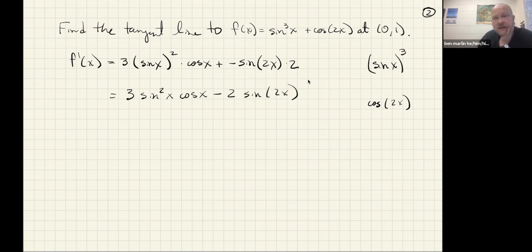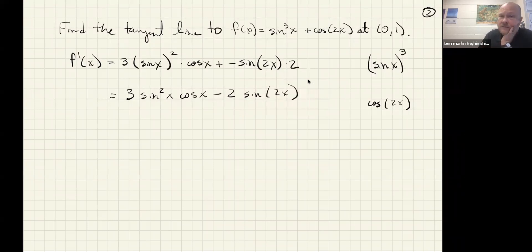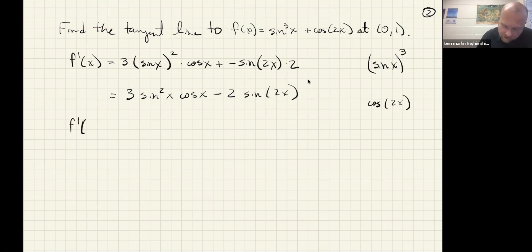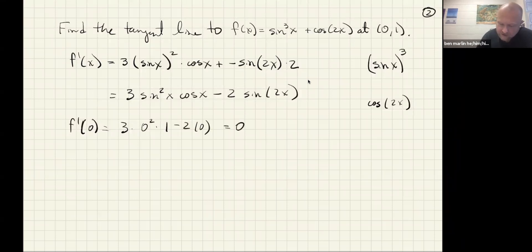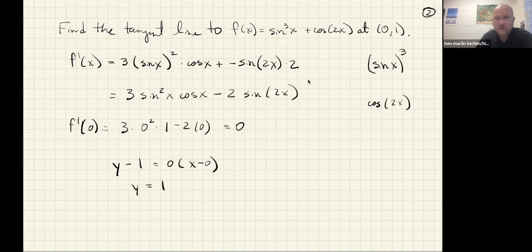If you needed to set this equal to zero, you'd also want to use trig identities to turn sine 2x into 2 sine x cosine x — but that's not necessary here. For our purposes, we need f prime at 0: 3 times sine of 0 squared is 0, cosine of 0 is 1, minus 2 times sine of 0 is 0. So the slope is 0 — not very interesting. Then y minus 1 equals 0 times (x minus 0), which gives us y equals 1 as the tangent line.